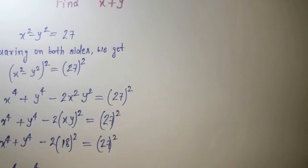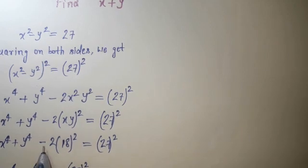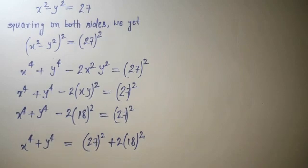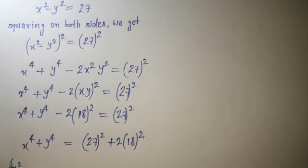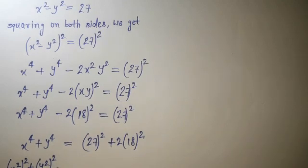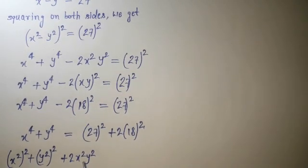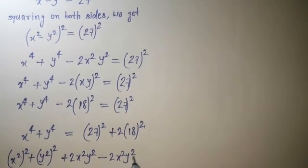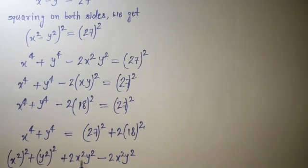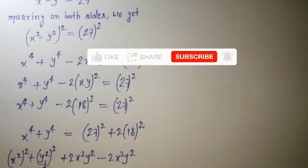Rearranging, 2 times 18 squared moves to the other side and becomes positive. Now I want to express x to the power 4 plus y to the power 4 as part of a perfect square. I write x to the power 4 plus y to the power 4 as x squared plus y squared whole squared, by adding and subtracting 2x squared y squared, giving us three terms that form x squared plus y squared whole squared.